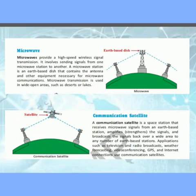Microwave transmission is used in wide open areas such as deserts or lakes. The last one is communication satellite. A communication satellite is a space station that receives microwave signals from an earth-based station, amplifies — meaning strengthens — the signal, and broadcasts it back over a wide area to any number of earth-based stations. Applications such as television and radio broadcast, weather forecasting, video conferencing, GPS, and internet connections use communications satellites.